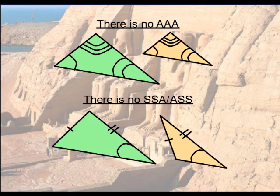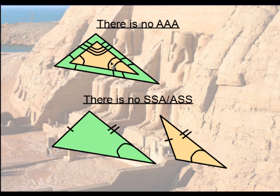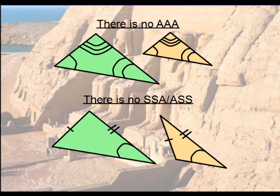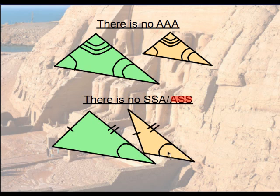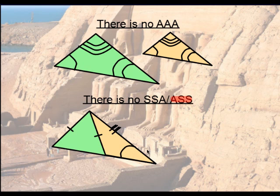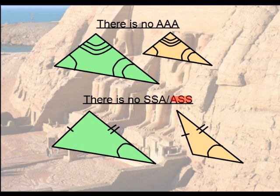Two postulates cannot be used to prove triangles congruent. The first is triple-A — there is no angle-angle-angle. The angles of one triangle may be the same as another, but that doesn't mean they're the same size. To be congruent, you have to be the same size and shape. The second is side-side-angle — SSA — which also isn't enough, because two triangles can share two sides and an angle but still have a gap and not be congruent. So there's no SSA, no AAA.